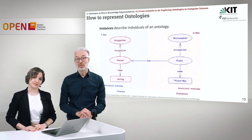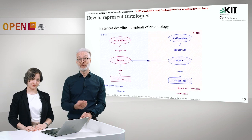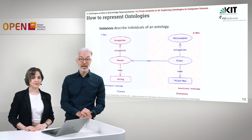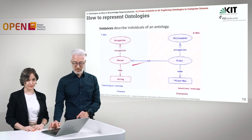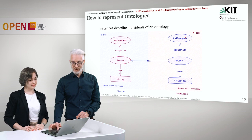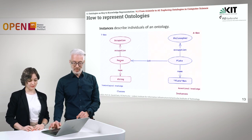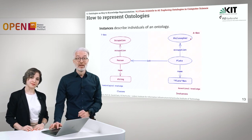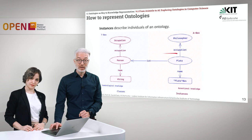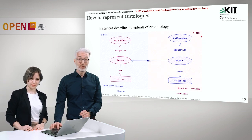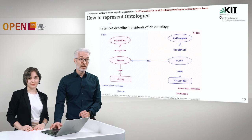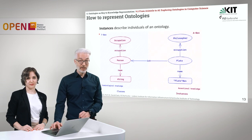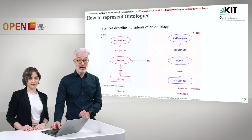Our ontology also has to be populated, so we need instances — individuals that populate these classes. For example, Plato is a philosopher and a person. His occupation is philosopher, but he is of type person, and a person usually has an occupation and a name, so Plato also has an occupation and a name. These assertions with the individuals form the part of a knowledge base usually called the A-box, for assertional knowledge. The other side, the T-box, contains all of the schema data — the classes and relations — and represents the terminological knowledge.